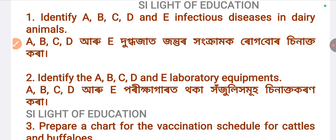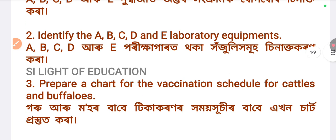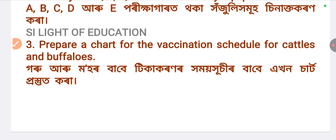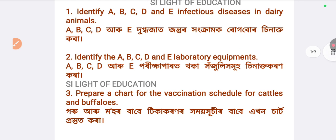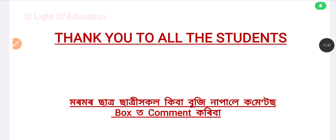Identify A, B, C, D, and E — infectious diseases in dairy animals. Next, two non-question: identify A, B, C, D, and E — laboratory equipments. Next, question three: prepare a chart for the vaccination schedule for cattle and buffaloes. These are the most important questions, especially regarding field visit and practical shots.